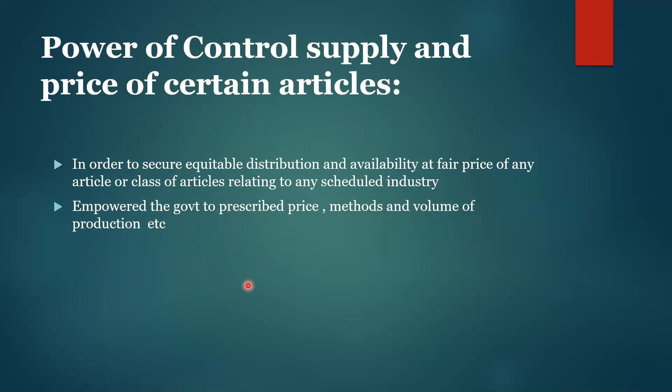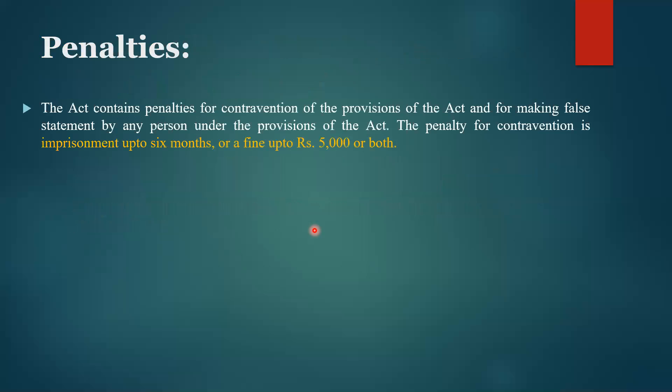The government is empowered to prescribe prices. The government has great authority under this act — it has the authority to prescribe the price of goods of a particular industry, prescribe the method, and describe the volume of production. These are all the major provisions of the Industrial Development and Regulatory Act, so that industries can develop and be regulated.